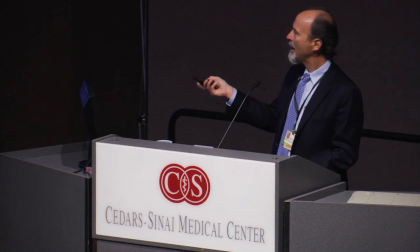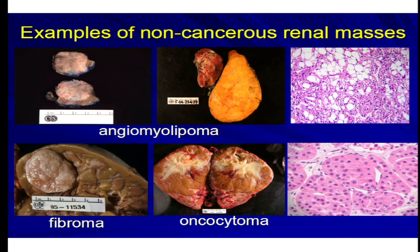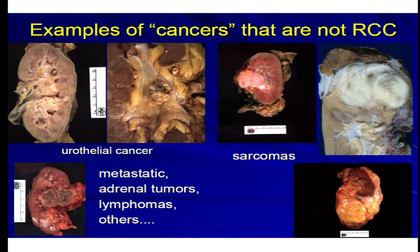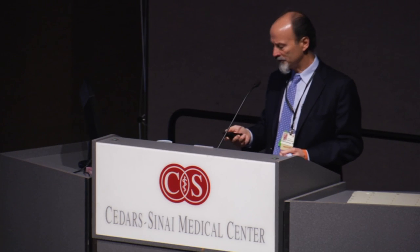Different types of tumors like fibromas and oncocytomas can be very large and aggressive looking, but are not malignant at all. There are also true malignancies of the kidney which are not renal cell carcinomas — urothelial cancers derived at the lining of the kidney, sarcomas derived at or around the kidney, and other tumors that can metastasize to the kidney — adrenal tumors, lymphomas. There's a whole host of malignancies that can mimic renal cell carcinomas.